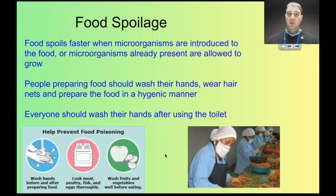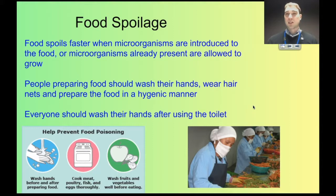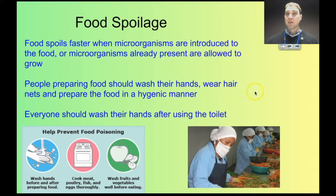So what causes food to spoil? It's the microorganisms — fungi or bacteria. It happens when they're introduced to the food, or are already present, and given conditions that allow them to reproduce really quickly. People preparing food need hygienic practices, because without them that can lead to contamination from the person to the food, or cross-contamination between different foods. Things like washing hands before preparing food, wearing hair nets, and separating different types of food from each other are very important.